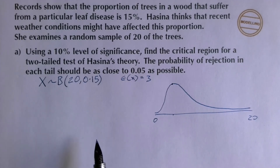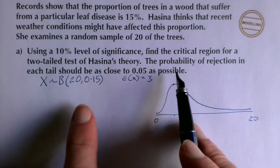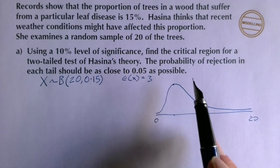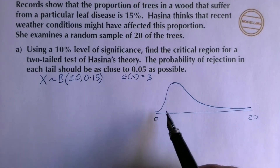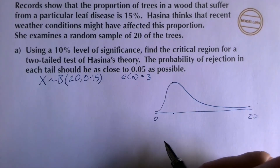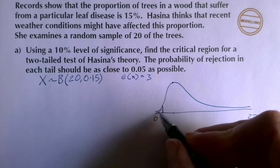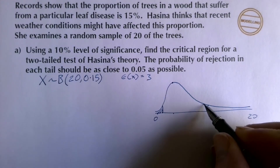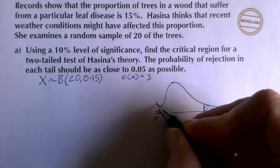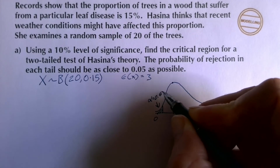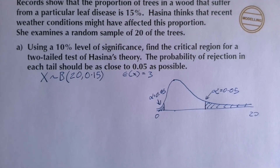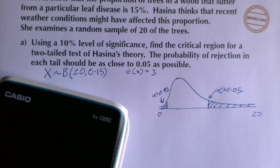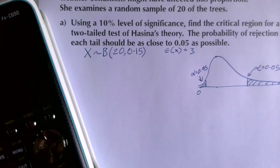Because the question says 'as close to 0.05 as possible', it doesn't matter which side of the line you fall on — it could be just over 5% if that's closer. We sketch the distribution and experiment with the calculator to find the critical boundaries at both ends.